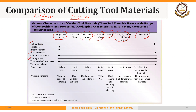The greater the hardness, the higher the cutting speed we can achieve, and the greater the material removal rate and productivity. But of course, this increased hardness and increased cutting speed comes at some cost — cost also increases as we move from left to right, from HSS to diamond.